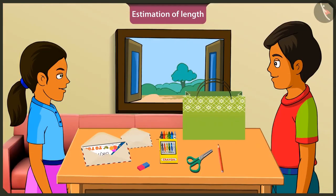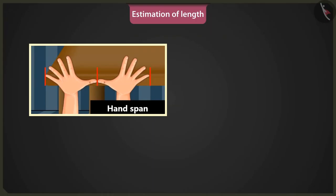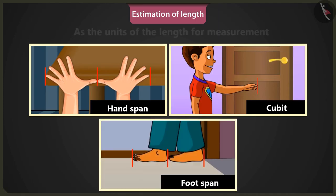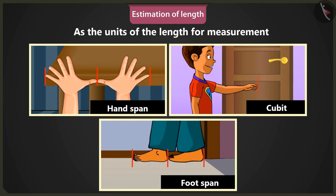Do you know, Mintu? When I went to my grandfather's house during the holidays, he told me that people during the old times used certain body parts to determine the length of objects. People used estimated measures of everything during those times. They used the length of palm — that is, hand span — length of hand — that is, cubit — and length of foot — that is, foot span — as units of measurement of length.